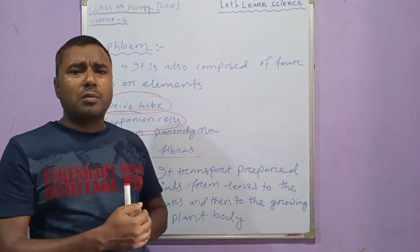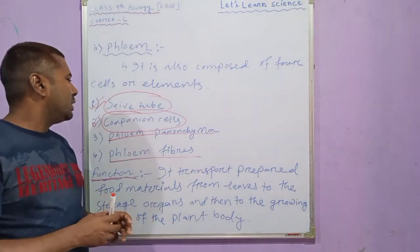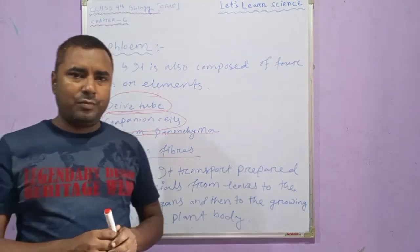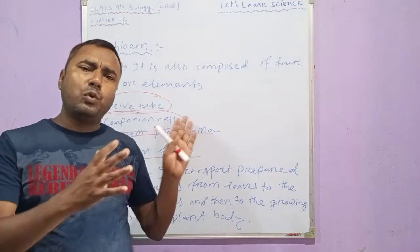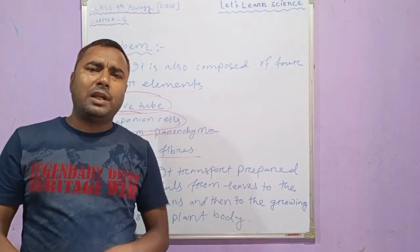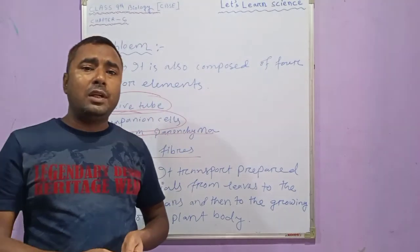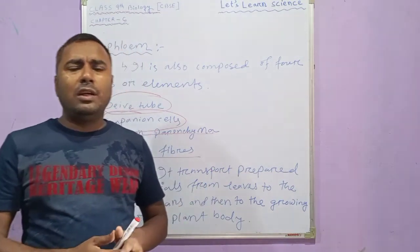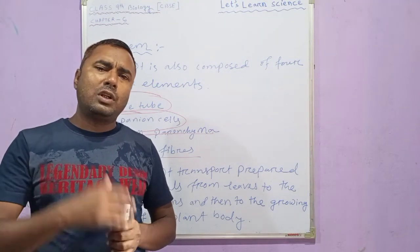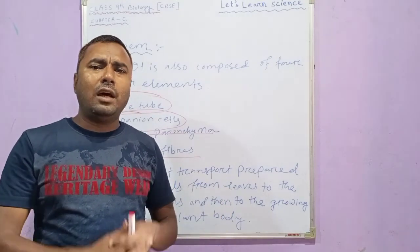We also learnt about phloem, which is also a complex permanent tissue made up of four types of cells or elements. Its main function is to transport prepared food material from the leaf to the storage region in the plant, and then from the storage region to the different growing parts and various parts of the plant. These two complex permanent tissues — xylem and phloem — carry out different types of transportation functions and that is why they are called conducting tissue or vascular tissue. Both combine together to form a vascular bundle in the plant body.